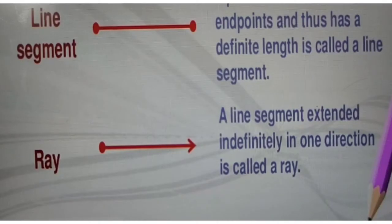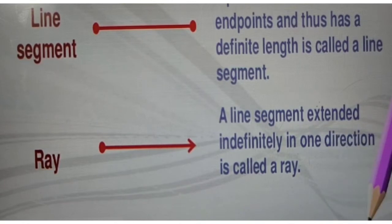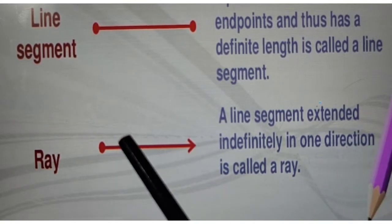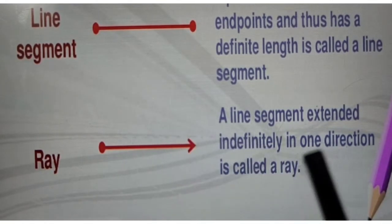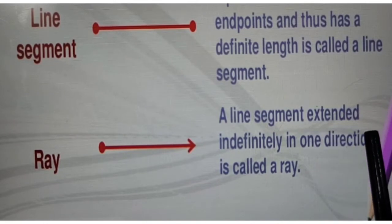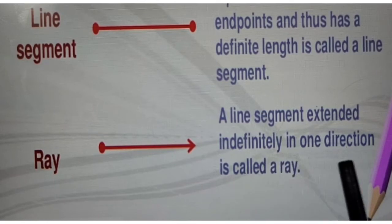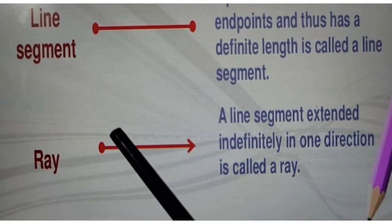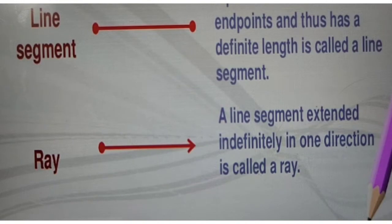Next we have ray. A line segment extended indefinitely in one direction is called a ray. From one direction it is fixed at a point, and another direction moves up to infinity. So a ray is a part of a line segment but extended indefinitely in one direction — one point is fixed and the other side goes to infinity.